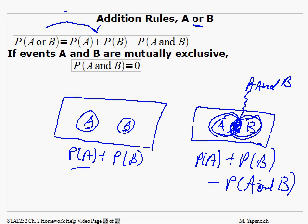If the events are mutually exclusive, there is no overlap at all. Then the probability of A and B is zero. So when you subtract it, it's zero, and all you have to do is add the probability of A and the probability of B.